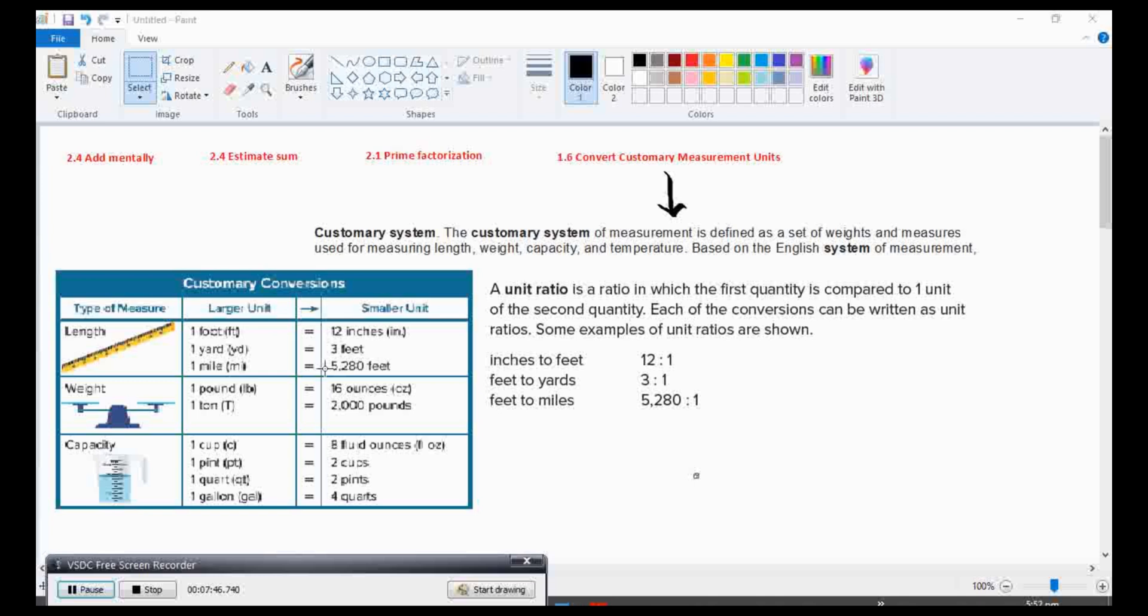Customary conversion units for weight. We have 1 pound is equivalent to 16 ounces. One ton is equivalent to 2,000 pounds. The customary conversion units for capacity: One cup is equivalent to 8 fluid ounces. One pint is equivalent to 2 cups. One quart is equivalent to 2 pints. And one gallon is equivalent to 4 quarts. So those are the different customary conversion units of length, weight, and capacity.